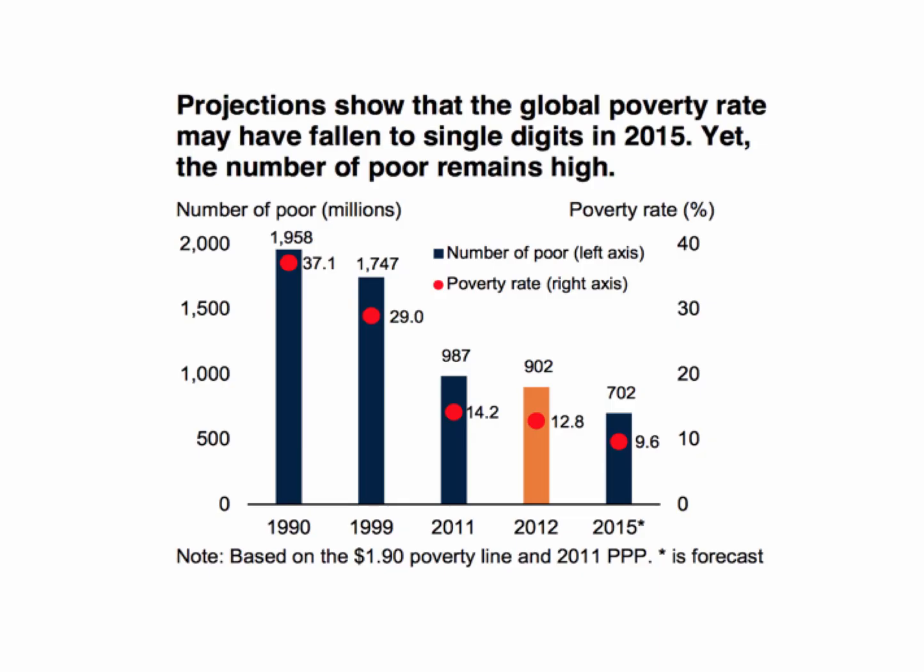According to the World Bank, the extreme global poverty rate has fallen. The estimated rate in 2015 was just below 10% — 9.6% of the world population — equivalent to just over 700 million people. Of course, that's come down dramatically since 1990 in particular, driven mainly by the growth of countries such as China and India.